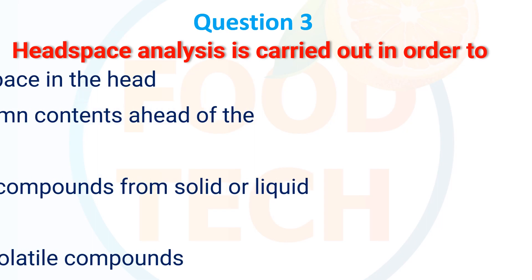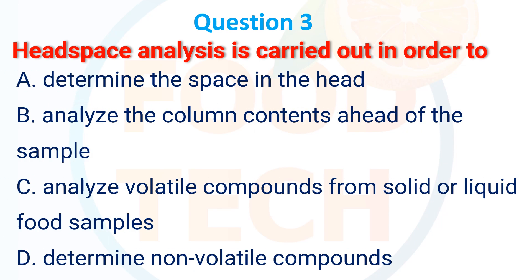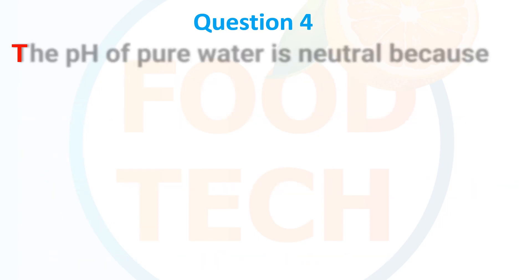Head space analysis is carried out in order to: A. Determine the space in the head, B. Analyze the column containing the head of the sample, C. Analyze the volatile compounds from solid and liquid food samples, D. Determine the non-volatile compounds. The correct answer is C: analyze the volatile compounds from solid and liquid food samples.